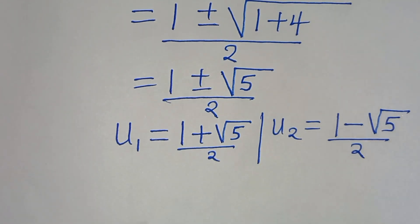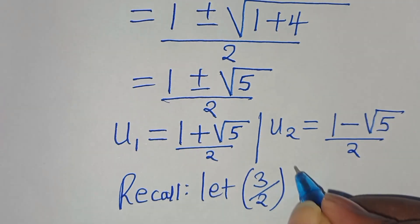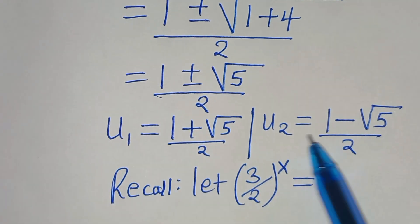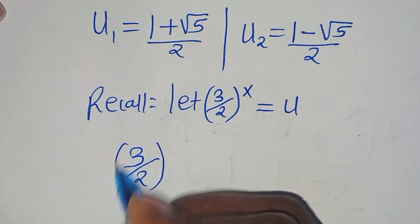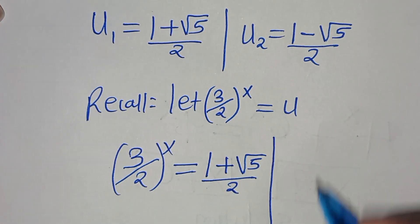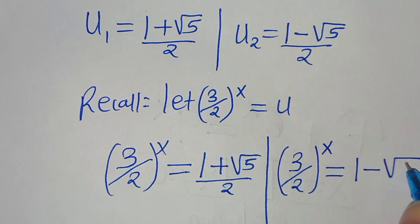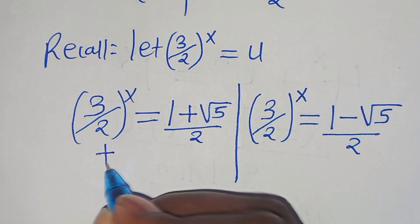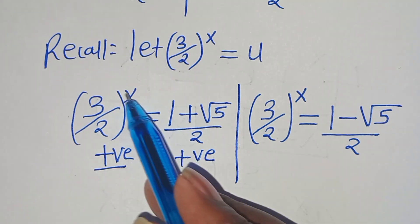Recalling that we let (3 over 2) raised to the power of x equal u, we substitute u₁ and u₂. Substituting back: (3 over 2)^x equals (1 plus square root of 5) divided by 2 for the first solution. Now, (3 over 2)^x always gives a positive value, and the right-hand side here is positive, so we can proceed to solve for x in this case.